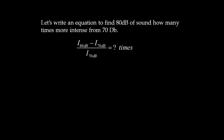We will write an equation: if we take the intensity of 80 decibel, subtract the intensity of 70 decibel, and divide by the intensity of 70 decibel, we will know how many times more intense 80 decibel is than 70 decibel, and from that we can find how many identical machines we need to add.